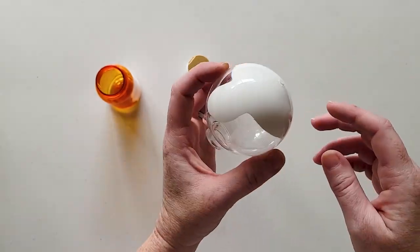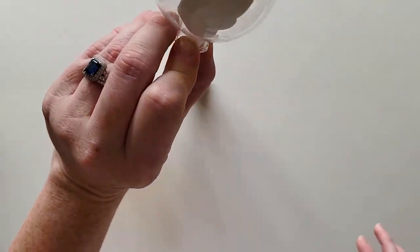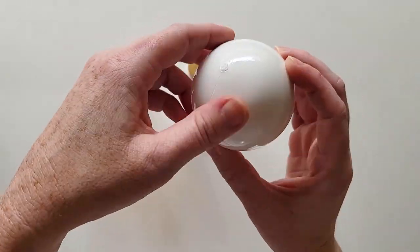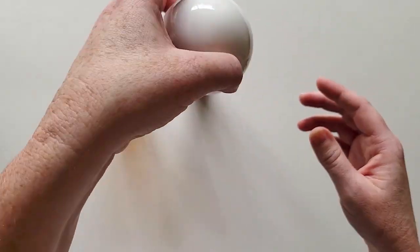Then squirt about a tablespoon amount of white acrylic paint and begin swirling it around the inside of the ornament until the inside is completely covered.